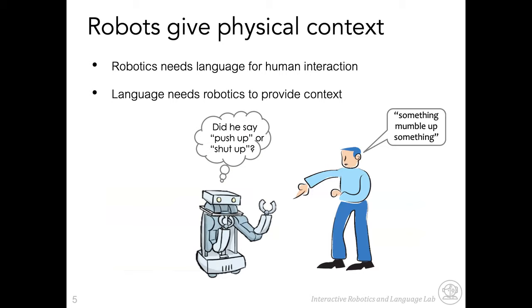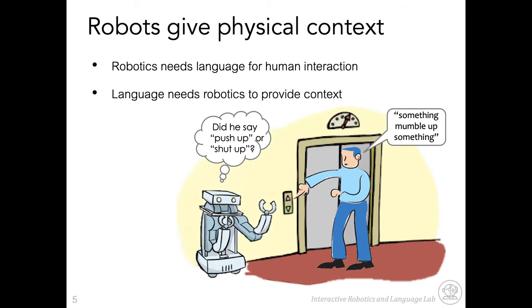Robots provide the physical context that language needs. As soon as computers extend into the world where they can see, interact with, and sense things, it moves into the realm of robotics. That's important because if you're trying to understand what someone is saying — what action a command should be grounded in — you could guess probabilistically: is it more likely someone says 'push up' or 'shut up' to a robot? With physical context, you have a much better idea of what's likely going on.